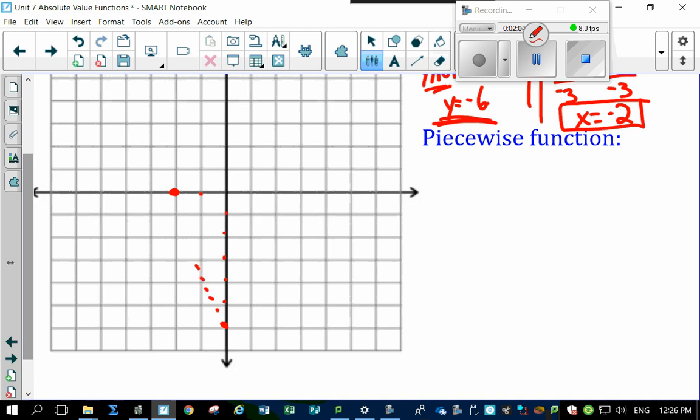And we can actually draw our original graph. Our original graph is going to go up like this. Oops, I did a little bit off here. Let's try that again. From minus 6 right here all the way up, kind of like that. There's our original line.